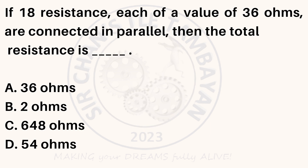If 18 resistances, each of a value of 36 ohms, are connected in parallel, then the total resistance is: A. 36 ohms. B. 2 ohms. C. 648 ohms. D. 54 ohms.